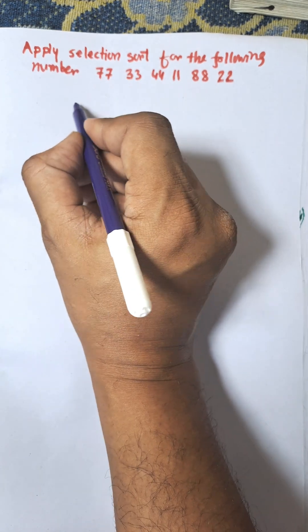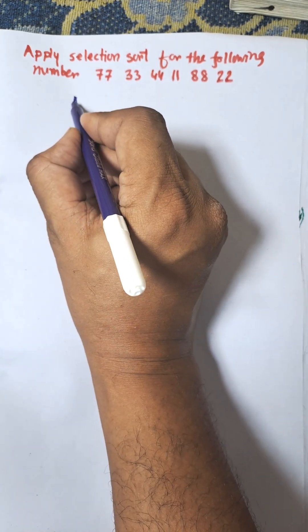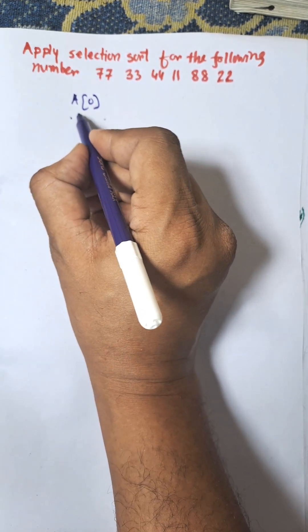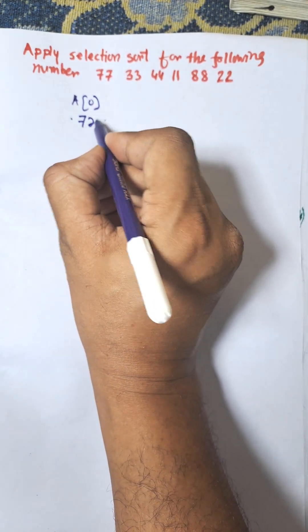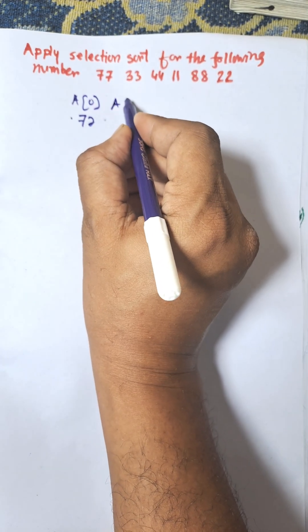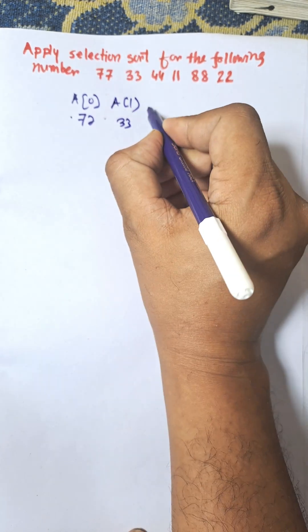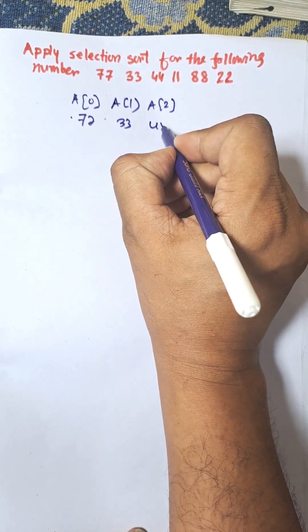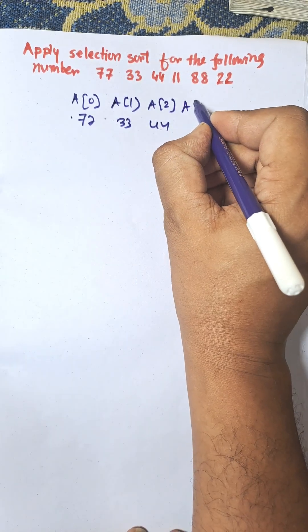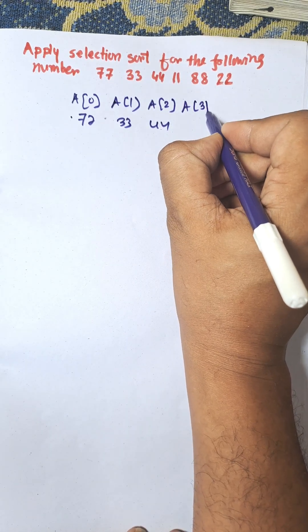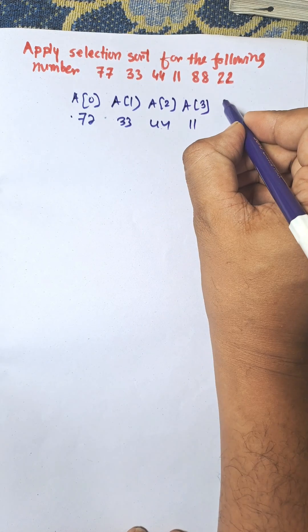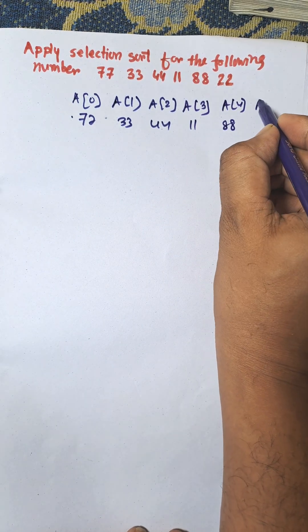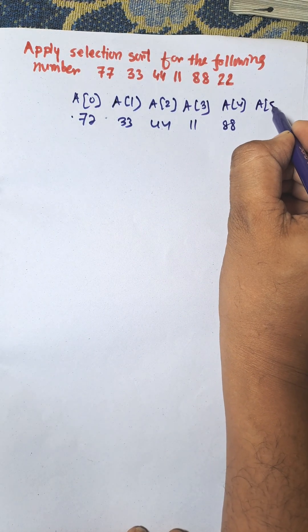Here the numbers are: A of 0 is 77, A of 1 is 33, A of 2 is 44, A of 3 is 11, A of 4 is 88, A of 5 is 22.